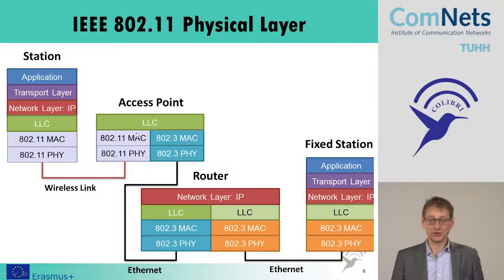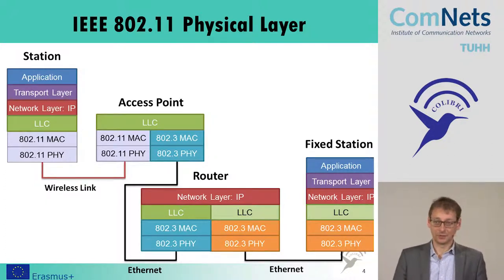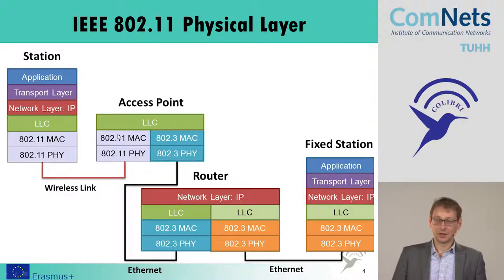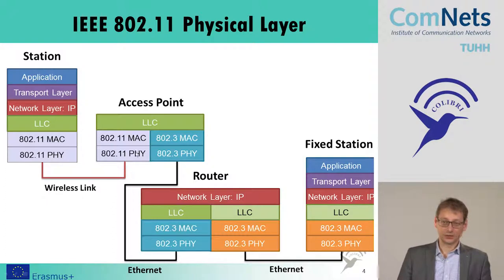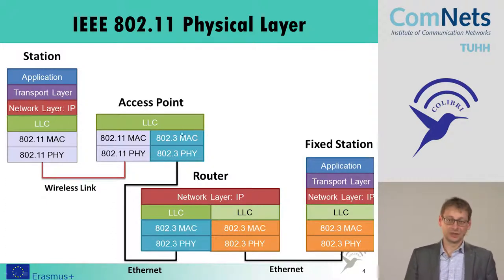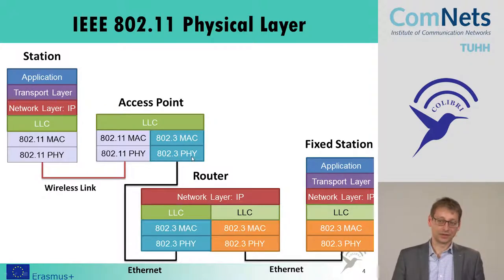The network layer is on the routers and end systems, forwarding packets according to the IP address in the packet header. We have the logical link control, the access point, and on the wireless link we have the 802.11 MAC and the 802.11 physical layer. If the packet is forwarded to the router, it is sent on the next link using the Ethernet protocol — the 802.3 MAC and physical layer accordingly.